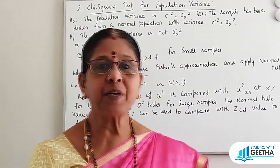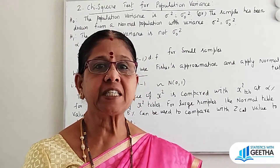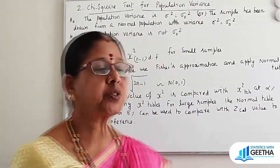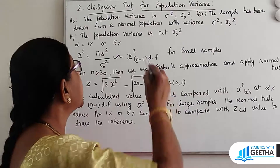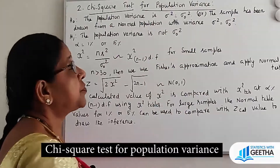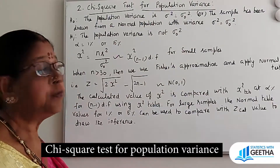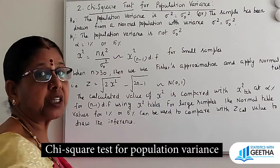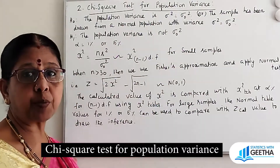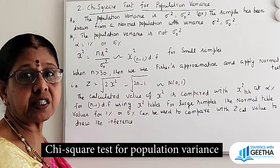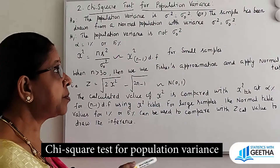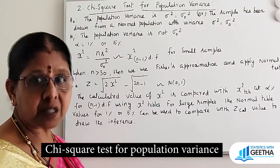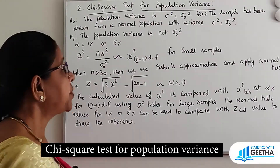Hello, welcome to my channel Statistics with Geetha. Today we are going to see the topic chi-square test for population variance. That is, we are going to test whether the population variance sigma square is equal to some sigma naught square.